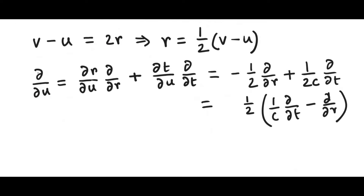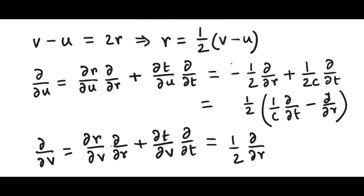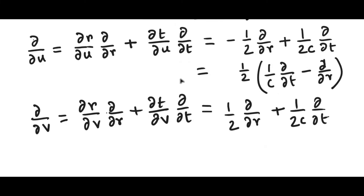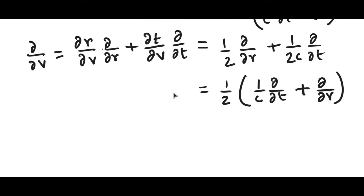Similarly, if we do the same thing with respect to v, using the same chain rule, we get ∂r/∂v equals positive one half, and ∂t/∂v equals 1 over 2c, giving a positive sign. Taking out the half, we are left with the operator (1/c)(∂/∂t) plus (∂/∂r).